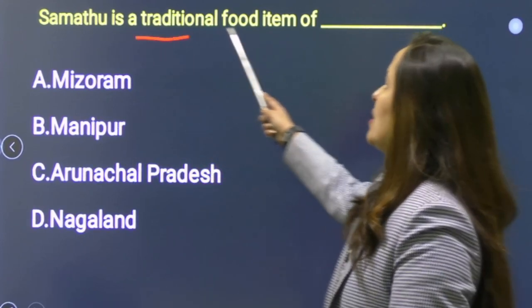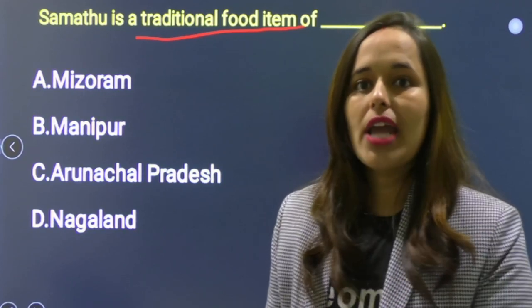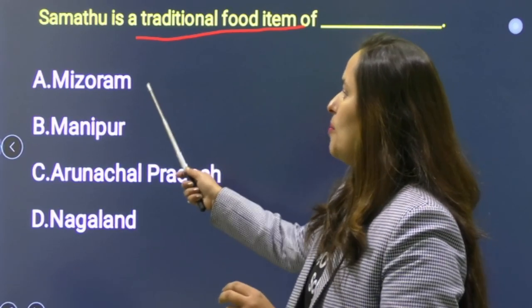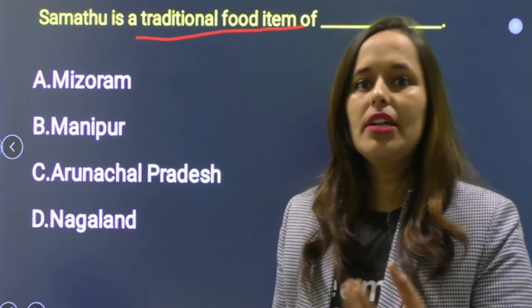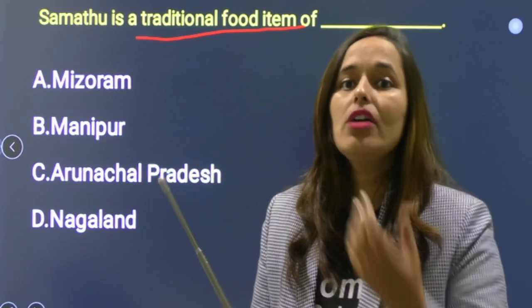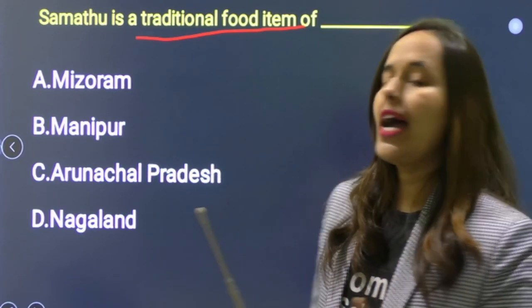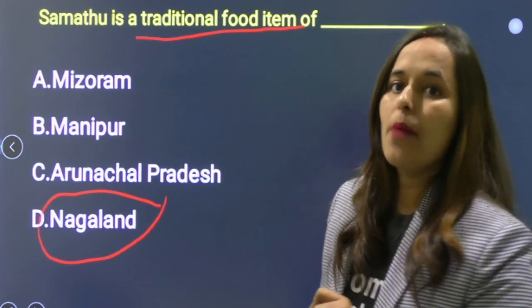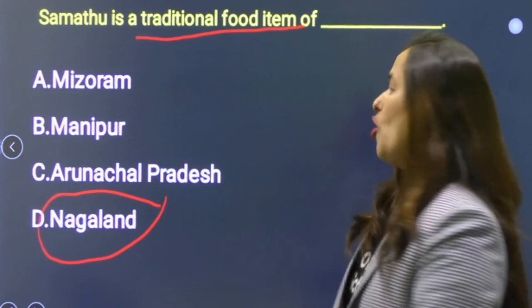Next: Samathu is a traditional food item of which state? Options: Mizoram, Manipur, Arunachal Pradesh, Nagaland. Samathu एक traditional dish है जिसमें pork को smoke किया जाता है। यह Nagaland की traditional dish है। Option D is correct.